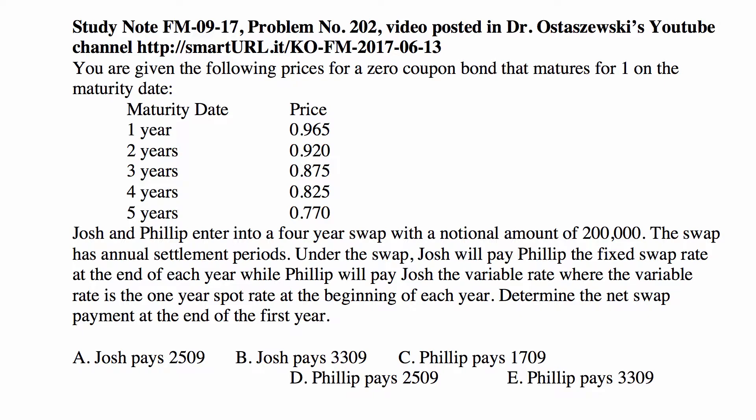You are given the following prices for a zero-coupon bond that matures for one — the maturity value is one dollar, paid on the maturity date. You have five different maturities: one, two, three, four, and five years. The price is the current present value of that one dollar paid one year, two years, three years, four years, and five years from now.